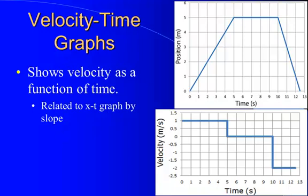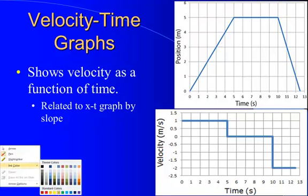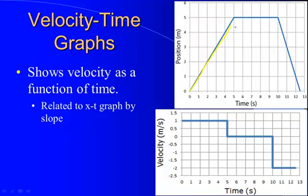If we look at velocity-time graphs, they show an object's velocity as a function of time. We can use the position-time graph to help get that. Over the first five seconds, the slope was one meter per second, so on our velocity-time graph we have a constant value of one. Over the next five seconds the dog was at rest — zero velocity, zero slope. And at the end, we had a negative slope of negative two meters per second. So you can obtain the velocity-time graph from the displacement-time graph.